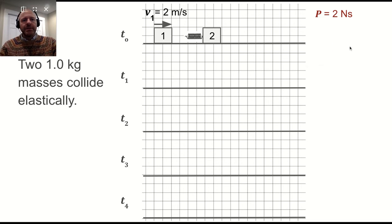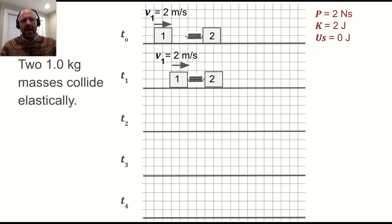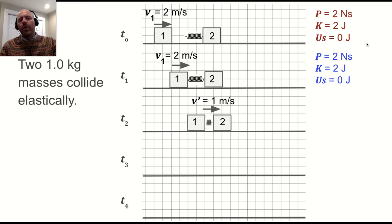As you're doing this, we have a momentum of 2 newton seconds and a kinetic energy of 2 joules. Spring potential energy is zero. Then when they touch, we still have that same scenario just as they come together before the spring is compressed. Then once the spring is compressed, there's some point at which the total momentum is still 2 newton seconds, but they're both moving together because the spring is fully compressed.